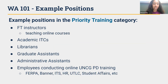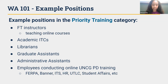Some example positions that might fall into that priority training for Level 1 would be our full-time instructors teaching online courses, academic ITCs, librarians, graduate assistants, and administrative assistants, but also employees who may be overseeing professional development training offered online. For example, FERPA online training, Banner training, and units like ITS, Human Resources, UTLC, and Student Affairs — all areas that often offer online training. These would be positions or units that would certainly benefit from Level 1 training and we would consider to be in that priority training group.